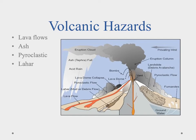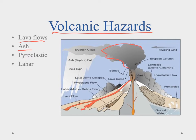Volcanic hazards include several types. The most obvious is the lava flow, where lava from the vent flows downward and melts or burns anything in its path like houses or villages. Ash is another hazard — it falls and covers everything, choking out plants and getting into animals' lungs. Ash can also mix with moisture in the air to produce acid rain.